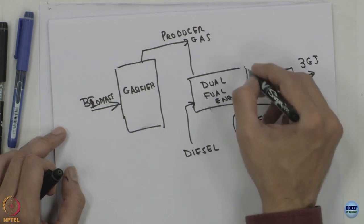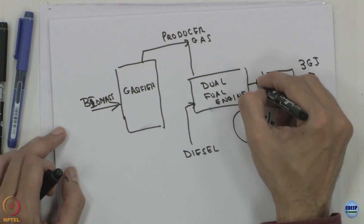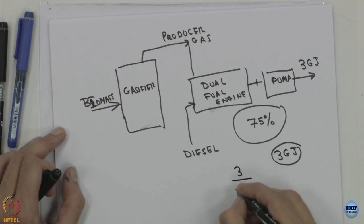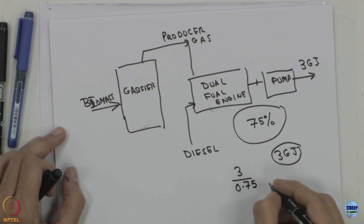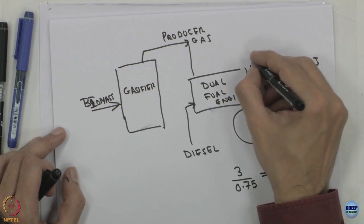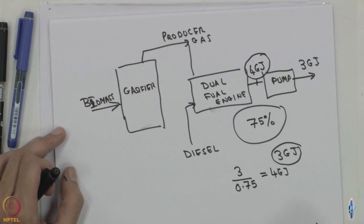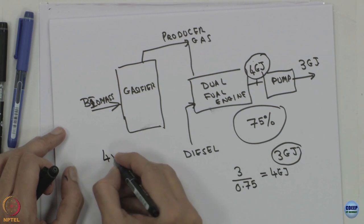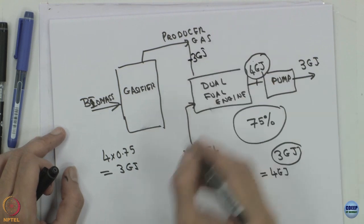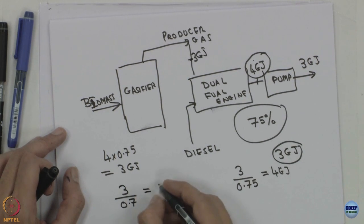When we look at this, we take the 3 gigajoules at the pump, apply the pump efficiency of 0.75, and get the required input: 3 divided by 0.75 equals 4 gigajoules. From those 4 gigajoules, 75 percent will be provided from the biomass gasifier — that is 4 × 0.75 = 3 gigajoules as producer gas output. The gasifier efficiency is 0.7, so the gasifier input is 3 divided by 0.7.